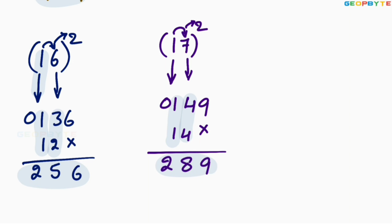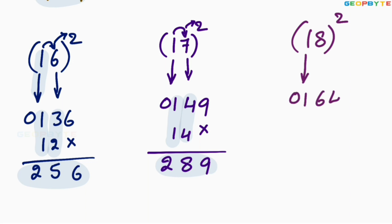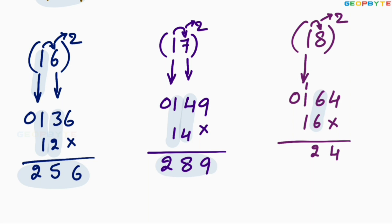Similarly, let us take the 18 square. Write 1 square first: 01. 8 square is 64. Multiply 1 with 8: 1 into 8 is 8. Multiply it by 2: 16. Leave the first space, write 16. Add these two: 4, 6 plus 6 is 12 — write 2 here, and 1 is carried to the other side. Now 1 plus 1 plus 1 equals 3. Therefore, 18 square is equal to 324.